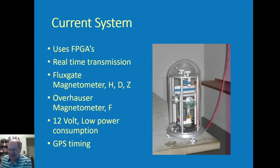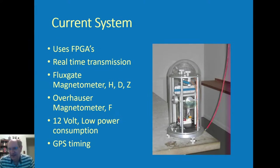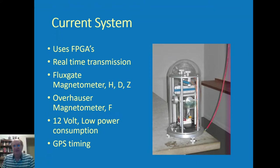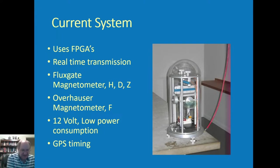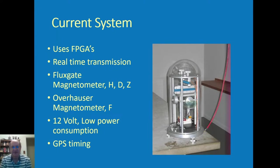Everything runs on 12 volts — very low power consumption. Typically we've been using a pair of car batteries that will keep the system running for several days or more. They're starting to think about going with lithium batteries, which are twice as expensive but also half the weight — and if you've got to carry one or two batteries 400 feet across uncertain terrain, that makes life a lot easier. Everything is timed using a GPS clock, so we have very precise time.